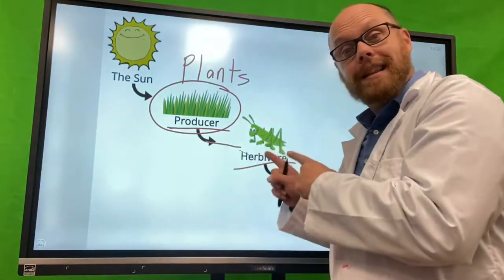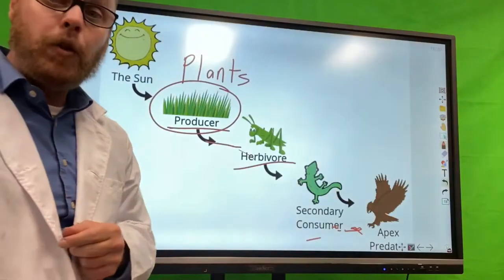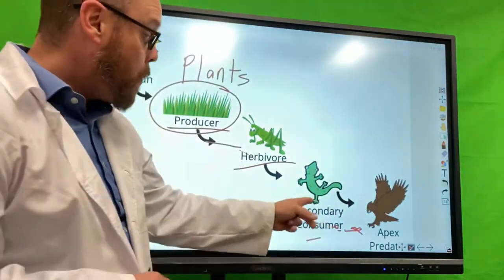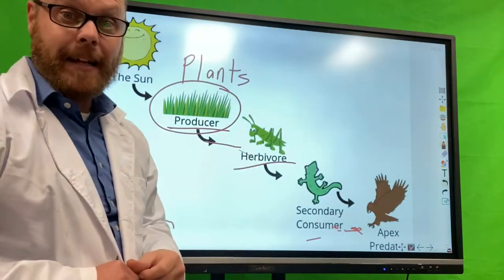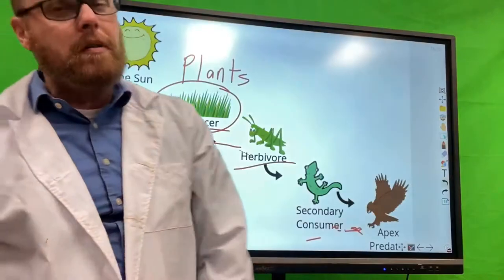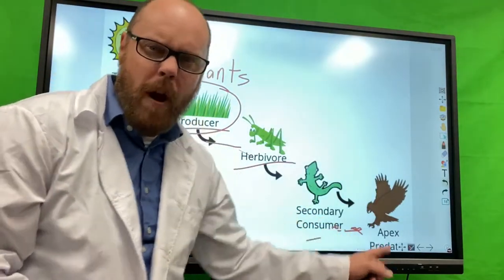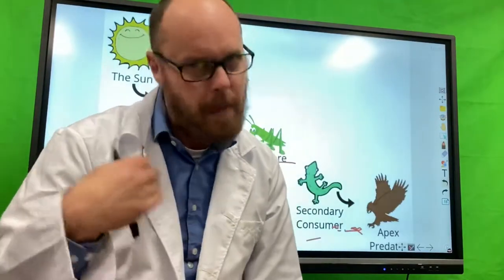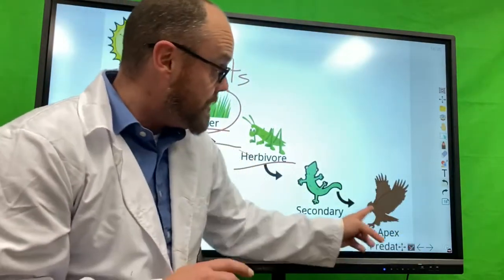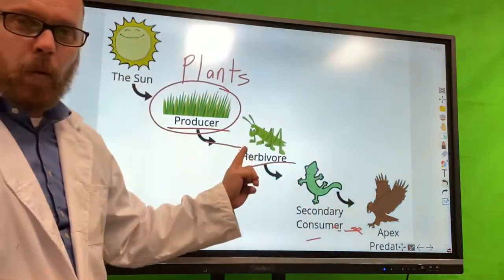There are things that eat this grasshopper, like our consumer here. Our lizard right here is going to eat the grasshopper and gain some energy. As we know, it's not going to gain all the energy, but just some. We're going to have this consumer right here eating, because that's what food chain is all about - it's about eating and transfer of energy. But is this secondary consumer safe? No. What's going to happen is we have an apex predator. We have the top of the food chain, or the end of the food chain depending on how you look at it. This predator - you don't see anything behind it, do you? Because nothing eats this predator. This is the last part of our food chain.